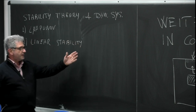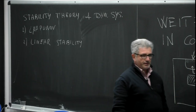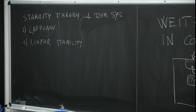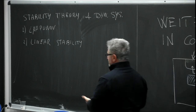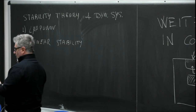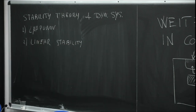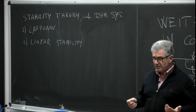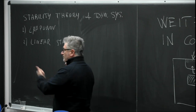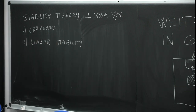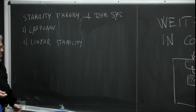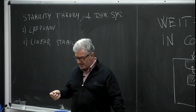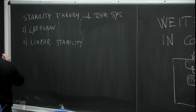Linear stability amounts to diagonalizing the stability matrix of your dynamical system, finding eigenvalues, finding eigenvectors, and discussing the position of your eigenvalues in the complex plane. Depending on their position you can decide if a fixed point is stable or unstable, and the eigenvectors define the direction of approaching or going away from the fixed point.